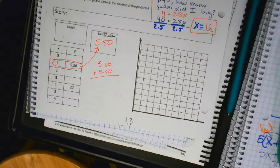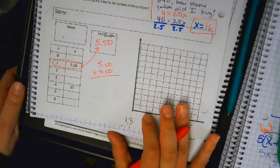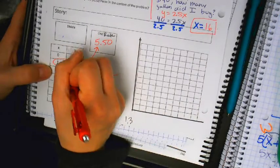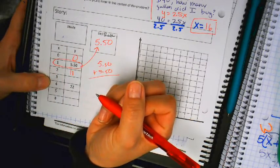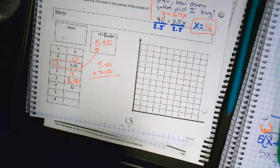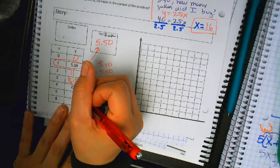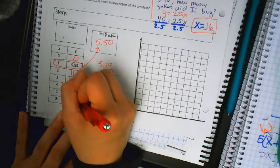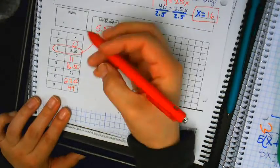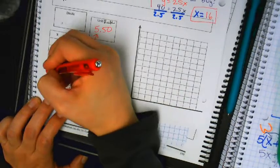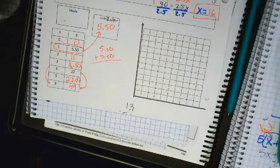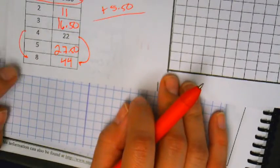What do I put next to the zero? Zero. Next to the two? 11. Three? 16.15. Eight? 44. Eight would be 44. It would just be double the 22. Because if I do 4 times 2, I get 8. So 22 times 2 is 44. That would be the easiest way to solve it.